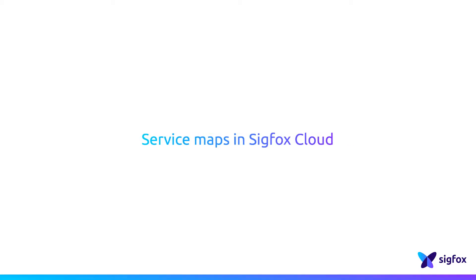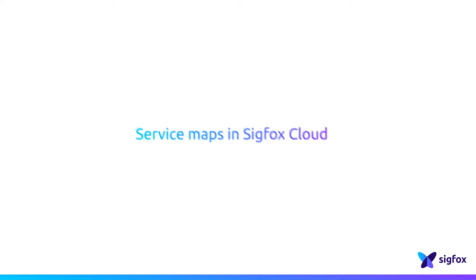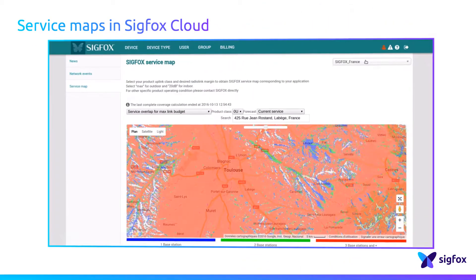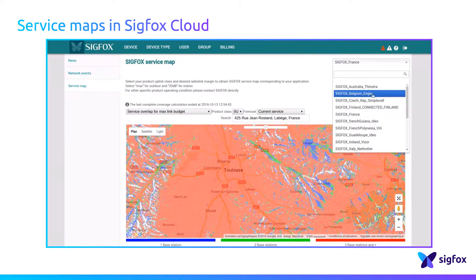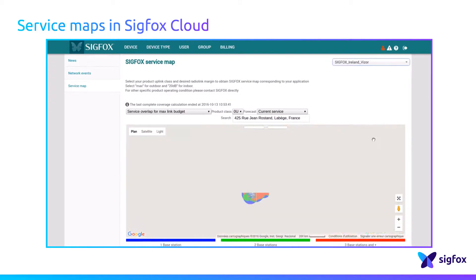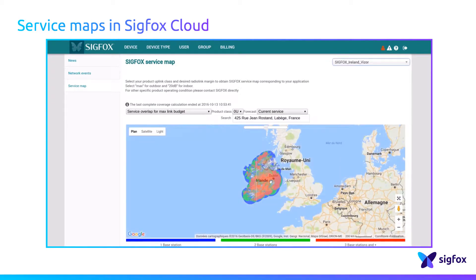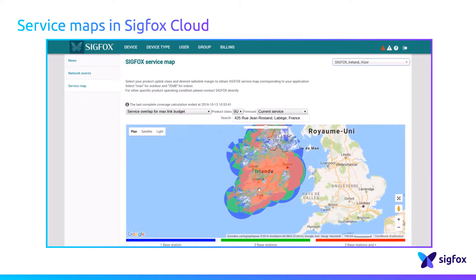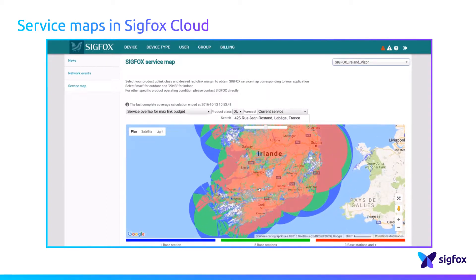The first way to access the service maps is through the Sigfox cloud in the Service Map section. The coverage is displayed for a selected territory, meaning that if you choose a country, you won't see the coverage of neighbouring countries.